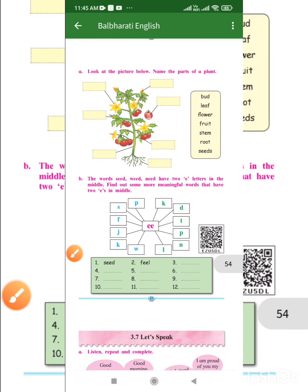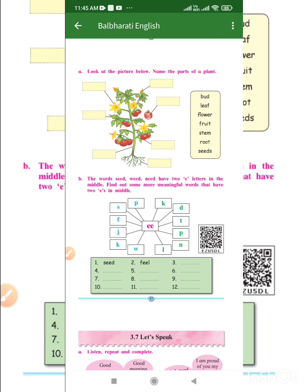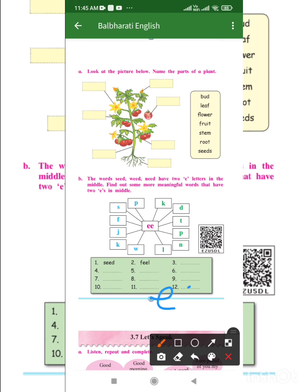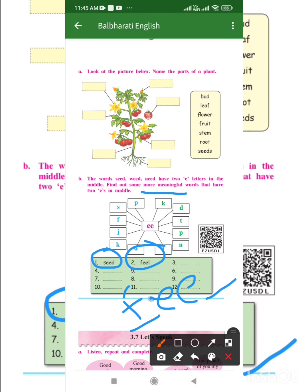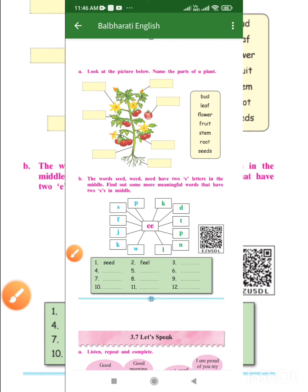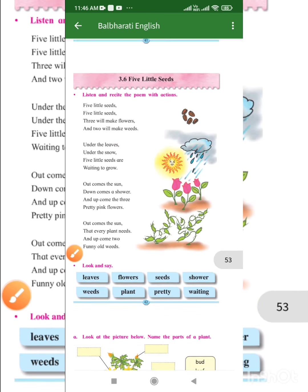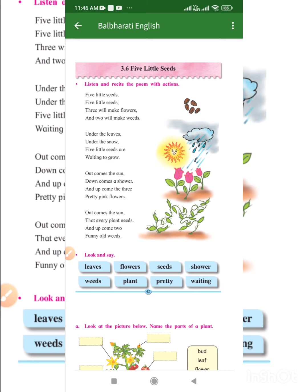The next question B is: make words like seed, weed, need — which have two E letters in the middle. You have to make a word which has two E letters in the middle. Seed and feel are already given. We have to write more words — for example, feed. You have to make 12 words using this chart. This lesson was very easy, children. I hope you all have understood it.